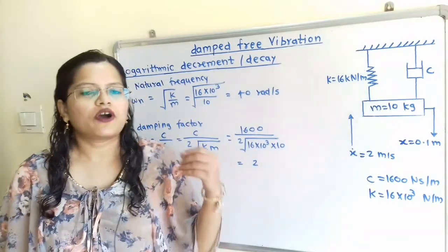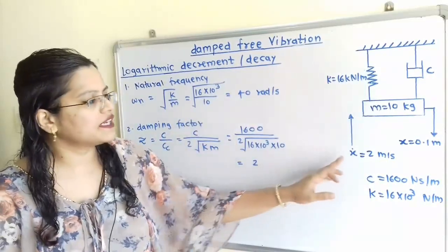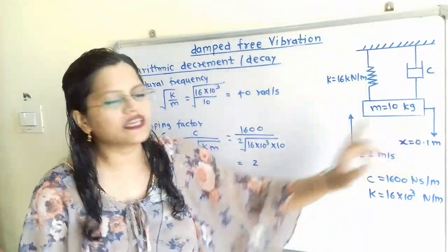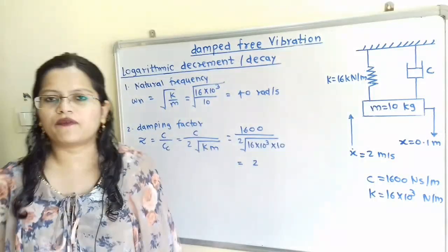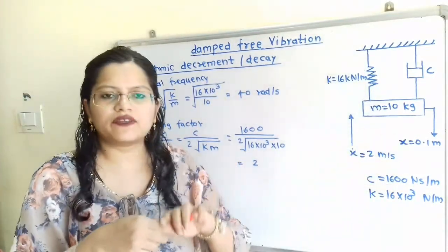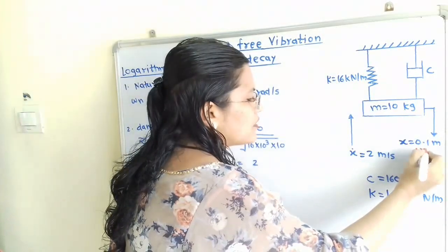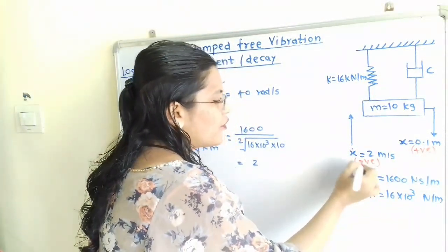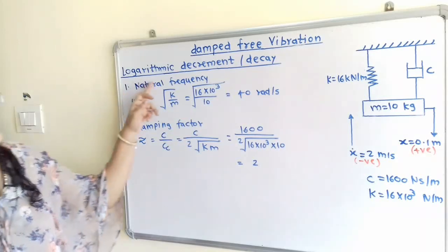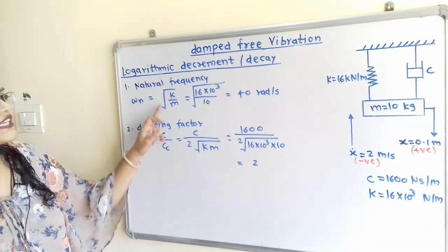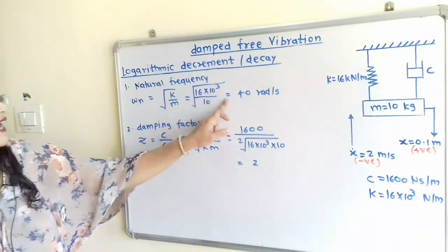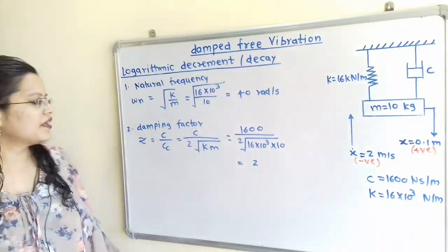When the mass is released, its velocity is 2 m per second but in the opposite direction. So if we consider the displacement with a positive sign, we have to consider this velocity with a negative sign. Now the first question is to find the natural frequency. Natural frequency ωN equals the square root of K by M. With K equal to 16×10³ and M equal to 10, the answer is 40 radians per second.